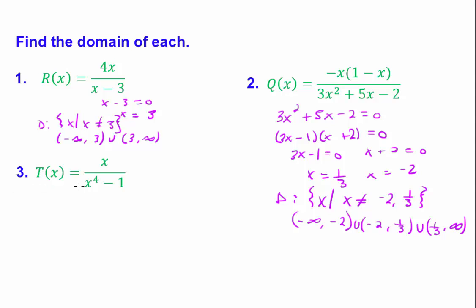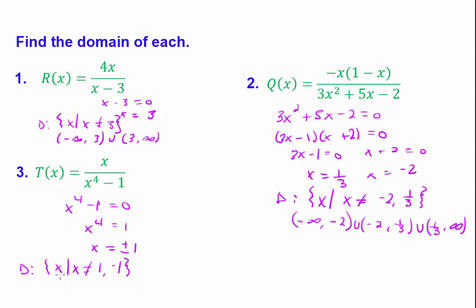For the last problem, we set the denominator equal to 0. So x to the 4th minus 1 equals 0, giving x to the 4th equals 1, and x equals plus or minus 1. So positive 1 and negative 1 are both restrictions. In set builder notation, the domain is x such that x cannot equal 1 and negative 1. In interval notation, it's negative infinity to negative 1, union negative 1 to 1, union 1 to infinity.